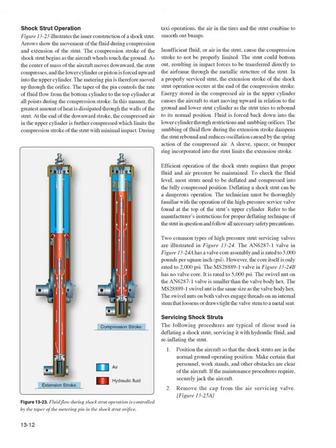The compression stroke of the shock strut begins as the aircraft wheels touch the ground. As the center of mass moves downward, the strut compresses and the lower cylinder or piston is forced upward into the upper cylinder. The metering pin is moved up through the orifice, and the taper of the pin controls the rate of fluid flow from the bottom to the top cylinder throughout the compression stroke, dissipating the greatest amount of heat through the walls of the strut. At the end of the downward stroke, the compressed air in the upper cylinder further compresses, limiting the compression stroke with minimal impact. Insufficient fluid or air in the strut causes the compression stroke to not be properly limited, and the strut could bottom out, transferring impact forces directly to the airframe.